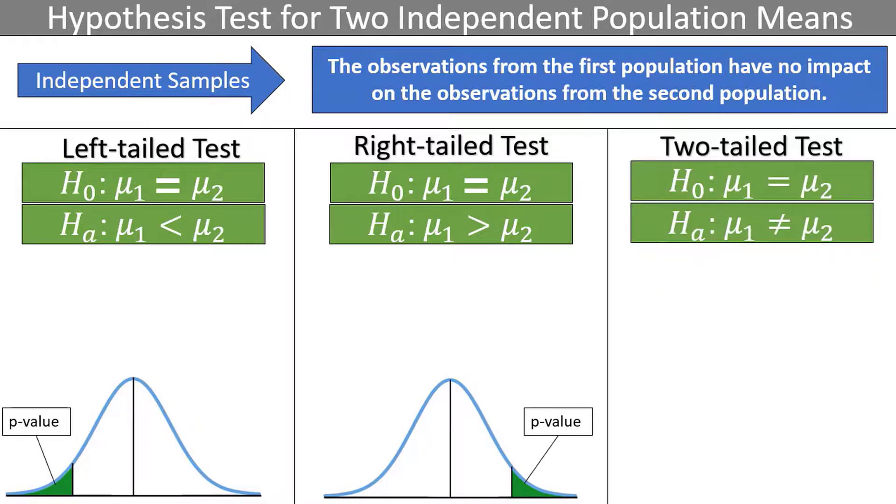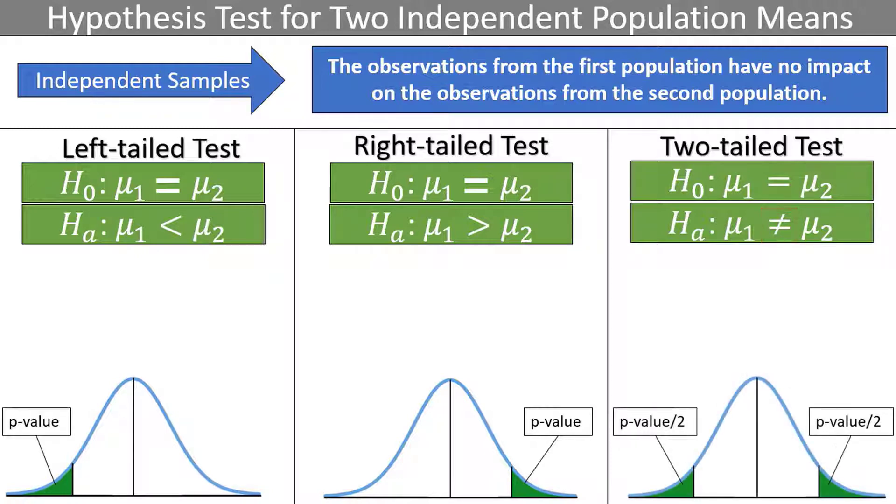For a two-tailed test, we believe there is a difference between the two population means, but we aren't sure which one is larger, indicated by a not equal to sign in the alternative hypothesis. And the p-value is the combined area in both tails. Note that the size of the p-value will vary based on the data, although I've drawn distributions showing relatively small p-values.